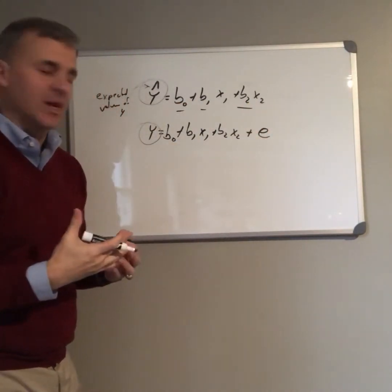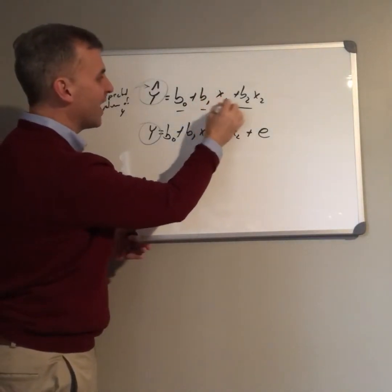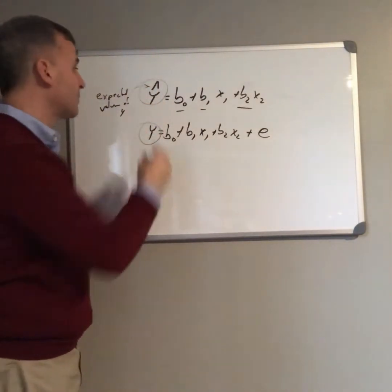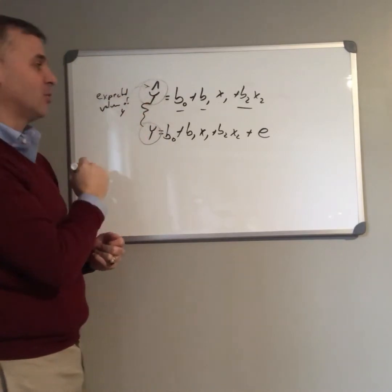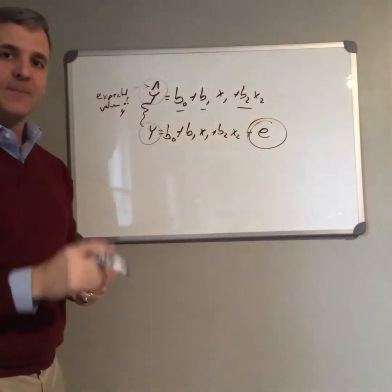For any particular case, we can take someone's value of x1 and value of x2 and predict what their y should be. But there's going to be a difference between their expected value of y and their actual value of y, and that difference is what we call error.